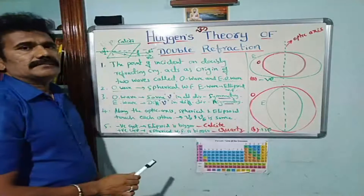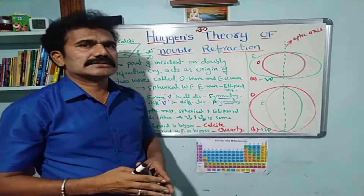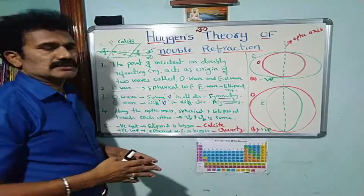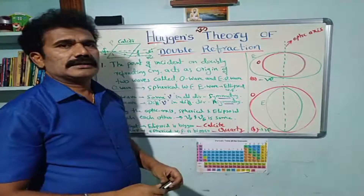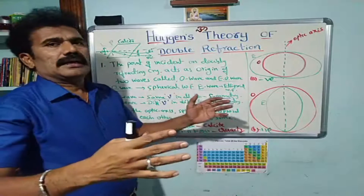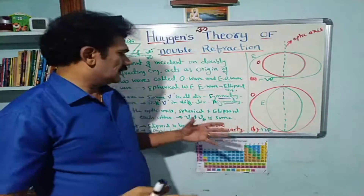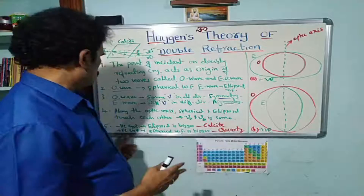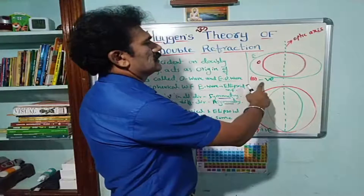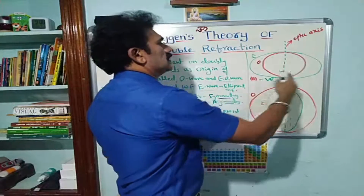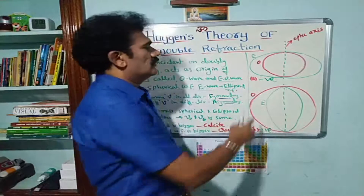We can classify doubly refracting crystals as positive crystals and negative crystals. In the case of a negative crystal, the ellipsoid wave front — which corresponds to extraordinary waves — is bigger than the spherical wave front. In the case of positive crystals, the spherical wave front is bigger. For example, calcite is a negative crystal and quartz is a positive crystal. In the diagram for negative crystals, the ellipsoid is bigger and they touch at two points.